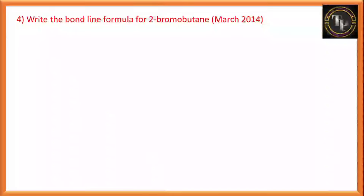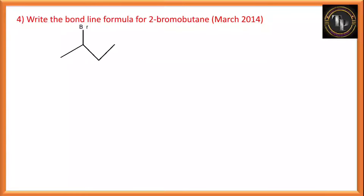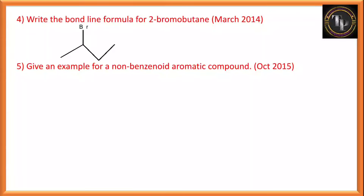Write the bond line formula for 2-bromobutane. In the bond line formula, carbon atoms are shown with dots and bonds are shown with lines. For 2-bromobutane, this is the bond line formula. Give an example of a non-benzenoid aromatic compound. The only example given in the NCERT is tropone — it is a 7-membered ring structure.